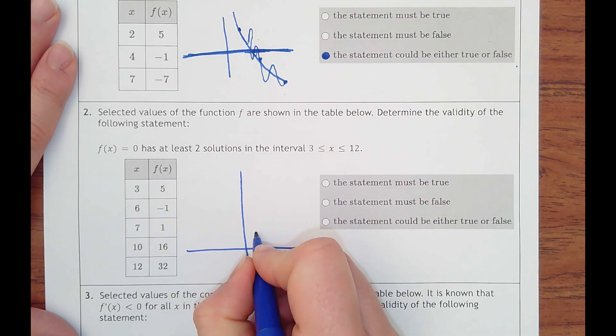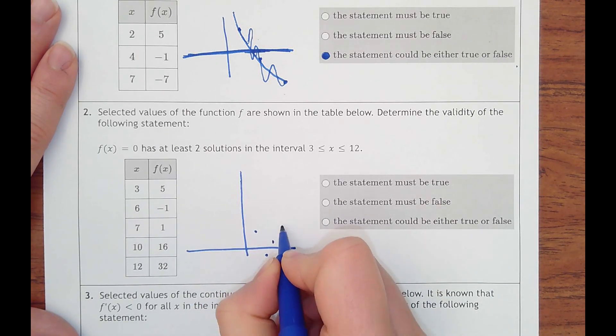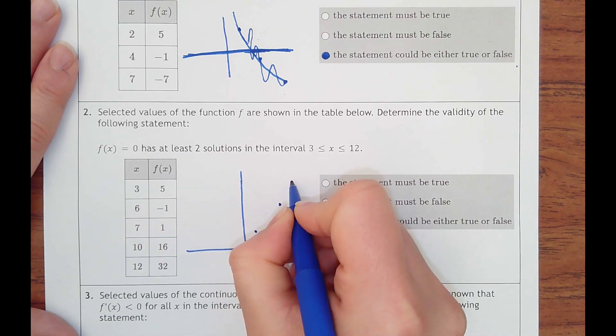3, 5, 6, negative 1, 7, 1, 10, 16, 12, 32, somewhere up there.